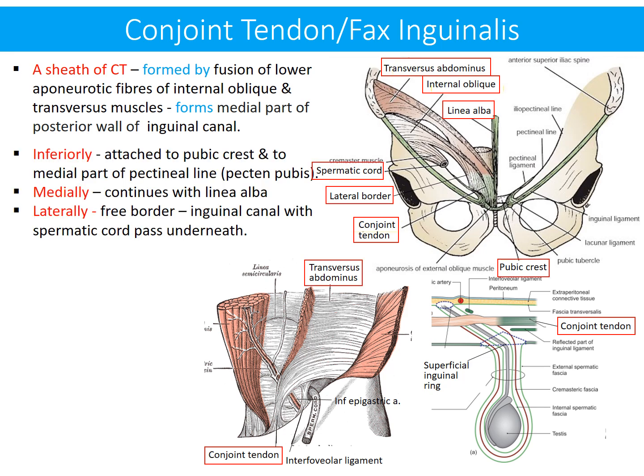As regards its attachments, inferiorly it is attached to the pubic crest and to the medial part of the pectineal line, or pecten pubis. Medially it continues with the linea alba, and laterally it presents a free border underneath which passes the inguinal canal with the spermatic cord.